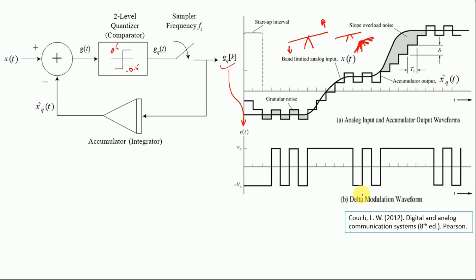So B is our Delta modulation waveform. So from the input x of t we have got this Delta modulation waveform at the output. So this concludes the transmitter part of our Delta modulator.